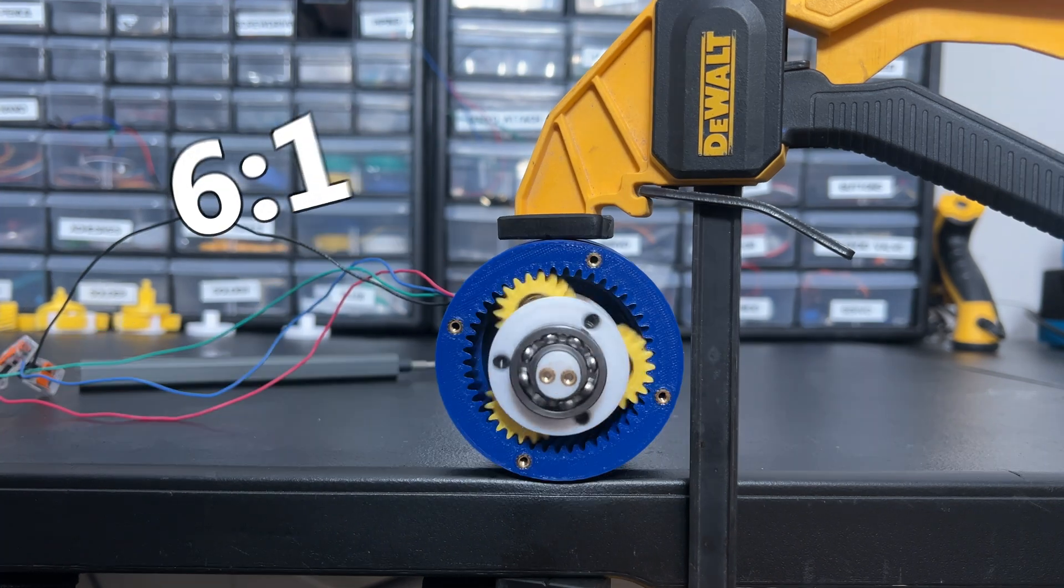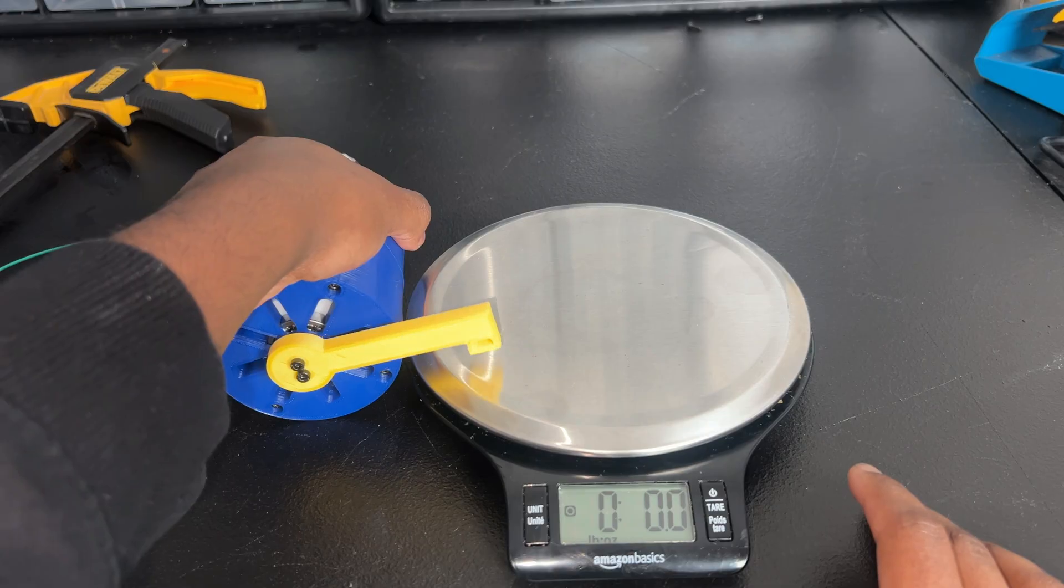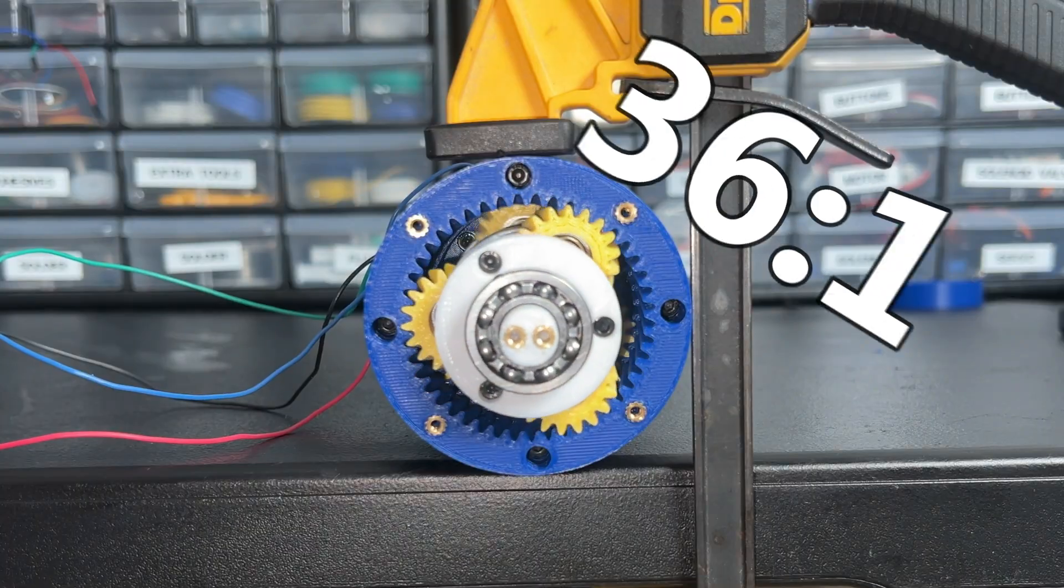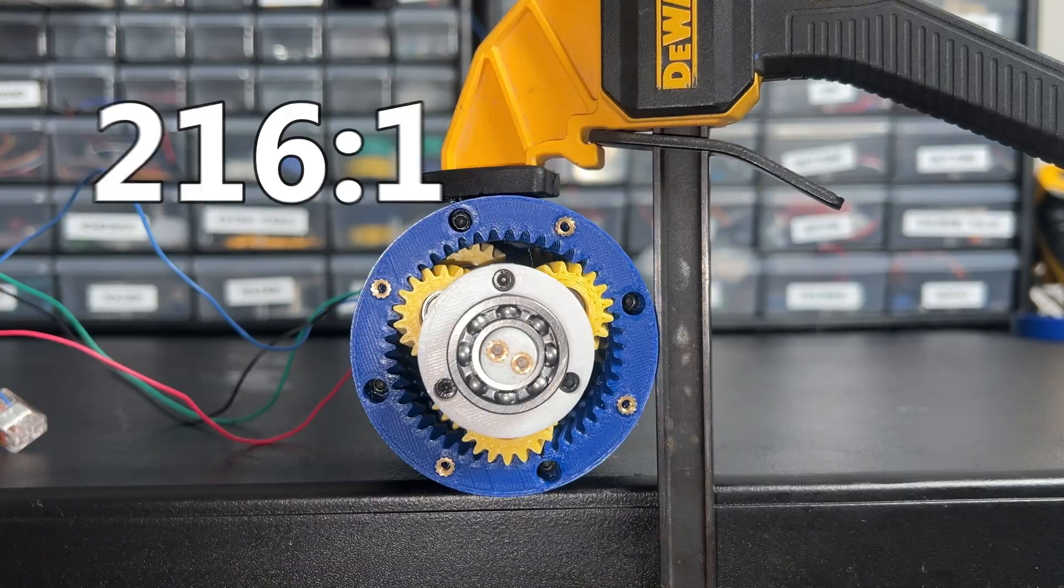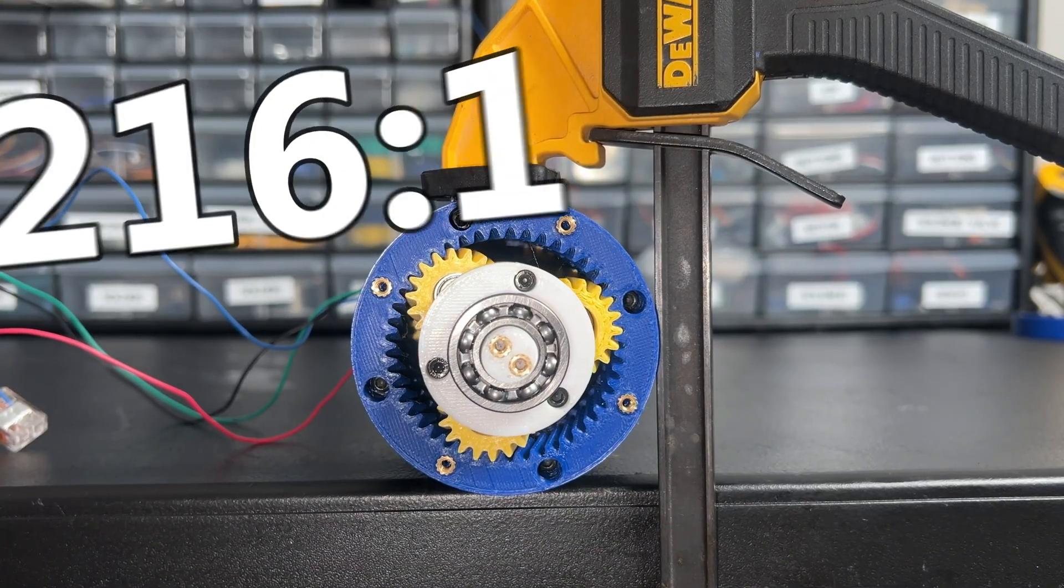This is a planetary gearbox with a 6 to 1 gear ratio, this is one with a 36 to 1 gear ratio, and this beast has a 216 to 1 gear ratio.